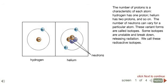The number of neutrons can vary for a particular atom. These variant forms are called isotopes. Some isotopes are unstable and break down, releasing radiation. We call these radioactive isotopes.